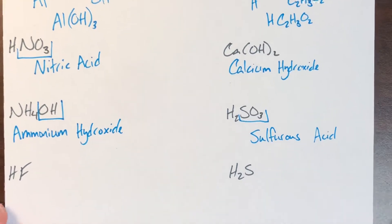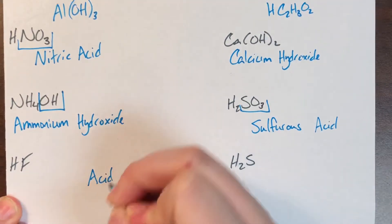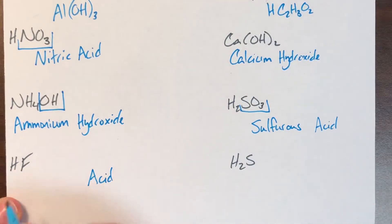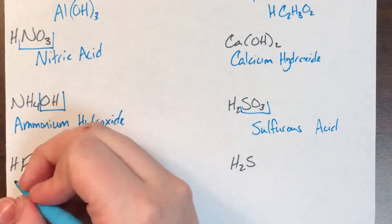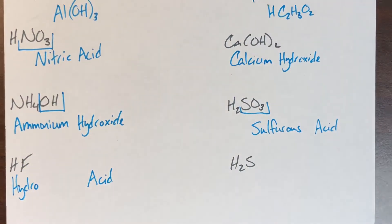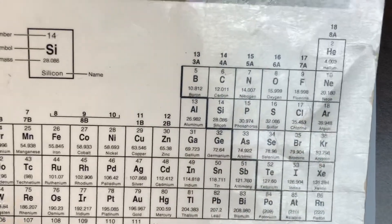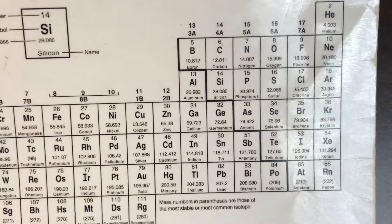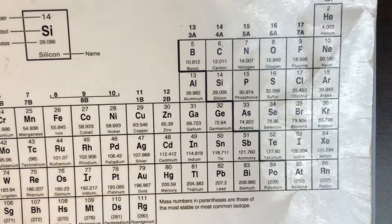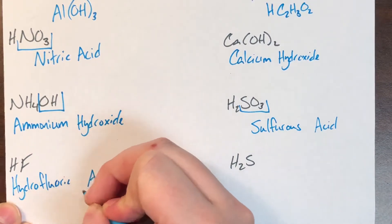Then I have HF. H tells me I'm going to end in 'acid.' F is directly off the periodic table, not a polyatomic ion, so I have to start with the prefix 'hydro.' F is fluorine. The same place I would change '-ine' to '-ide,' I instead change '-ine' to '-ic.' So this will be hydrofluoric acid.